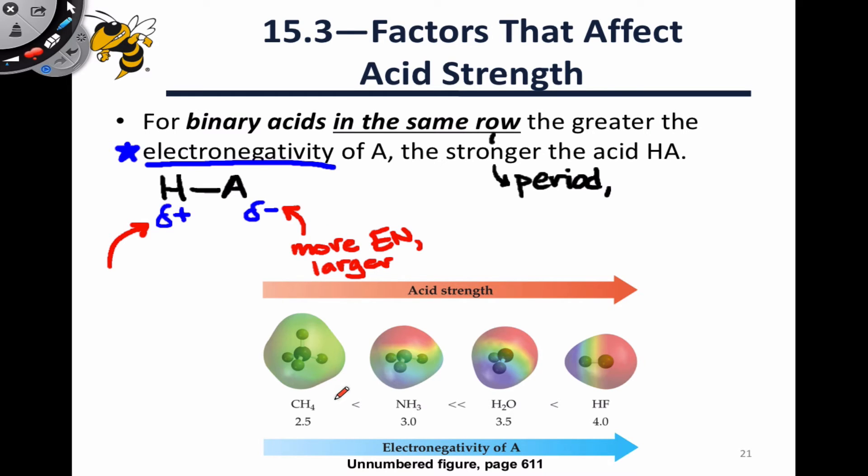We can look, for example, at the second period: carbon, nitrogen, oxygen, and fluorine, and see that as we move from less electronegative A to more electronegative A, we get a much more polarized HA bond. In CH4, we see almost a perfect balance. If we focus especially, for example, on this region of this electrostatic potential map, it looks basically uniformly green. It's hard to tell the difference here. These bonds really aren't polarized at all.